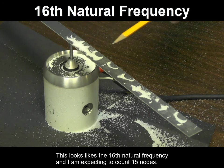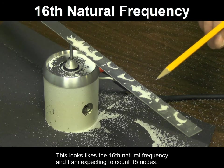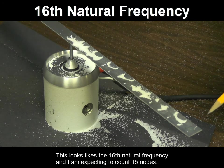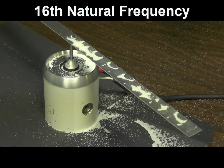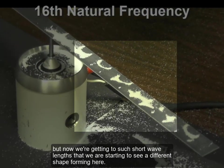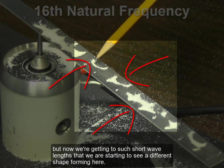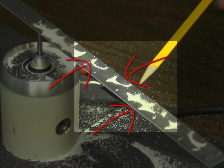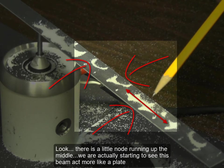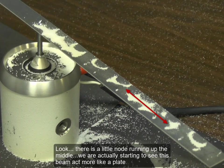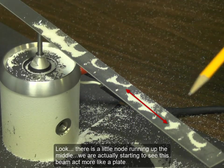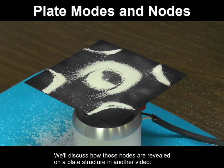This looks like the 16th natural frequency, and I'm expecting to count 15 nodes. But now we're getting to such short wavelengths that we are starting to see a different shape forming here. Look, there is a little node running up the middle. We are actually starting to see this beam act more like a plate. We'll discuss how those nodes are revealed on a plate structure in another video.